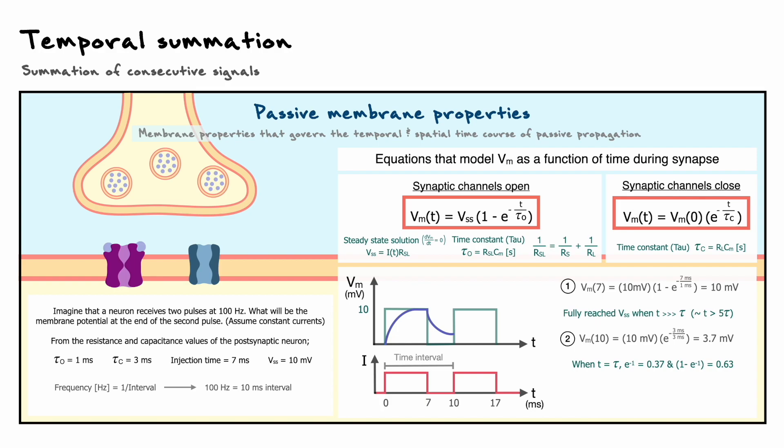Indeed, when time and tau are equal, the exponential factor simply becomes e to the negative 1 or 1 minus e to the negative 1, which respectively gives 0.37 and 0.63. Hence, here I only had to multiply 10 by 0.37 instead of entering the exponential term in my calculator which can be a bit tedious at times.